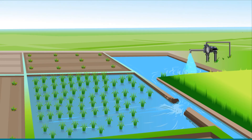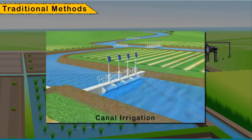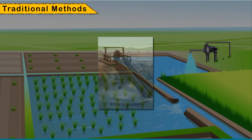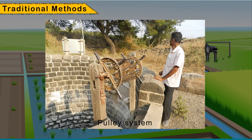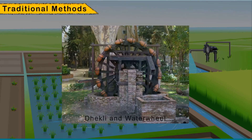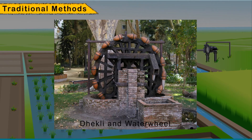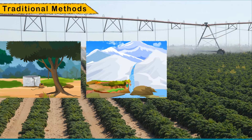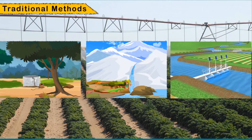The methods of irrigation can be broadly categorized into traditional and modern methods. The traditional methods include canal irrigation, furrow irrigation, chain pump, pulley system, moat, dheakli, and water wheel (rehat). The water available in wells, lakes, and canals is lifted up by different methods in different regions for taking it to the field. Cattle or human labor is used in these methods.